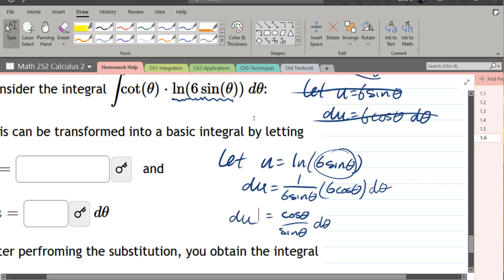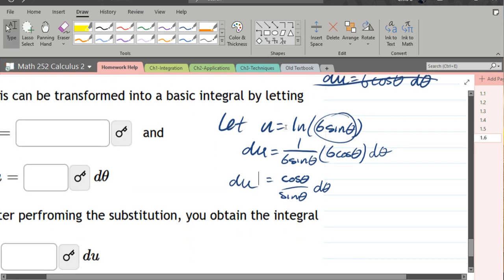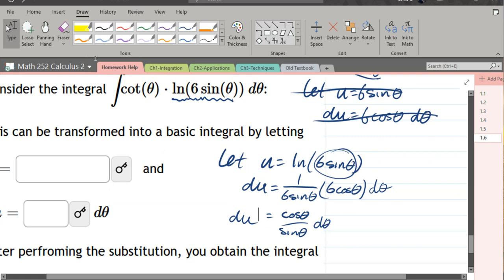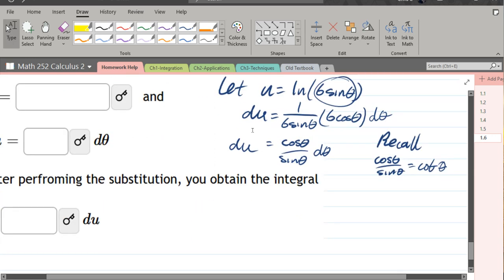From here, wouldn't it be nice if cos over sine was cotangent? And it turns out it is. Recall cos theta over sine theta is cotangent theta.